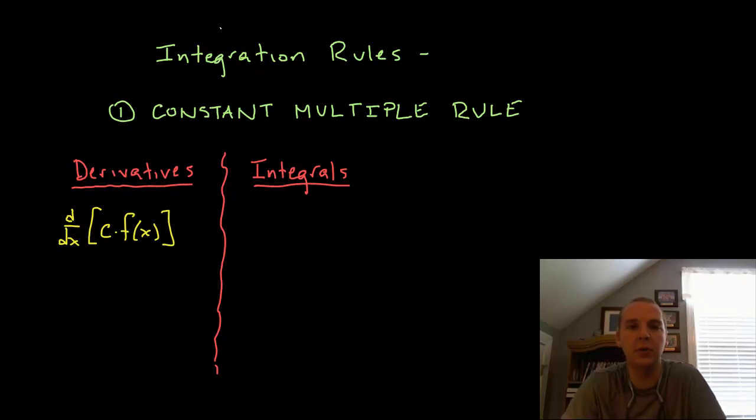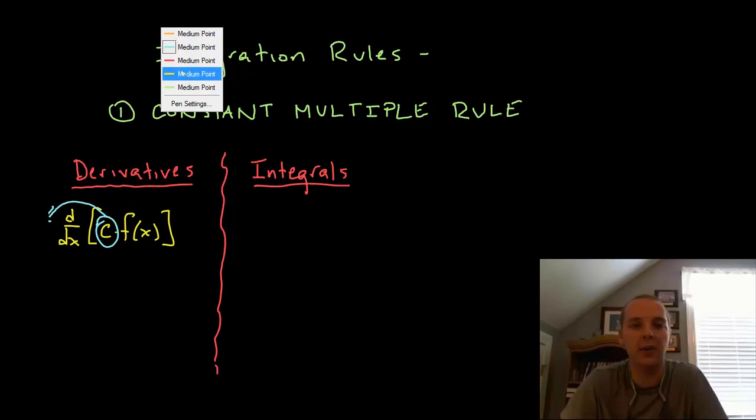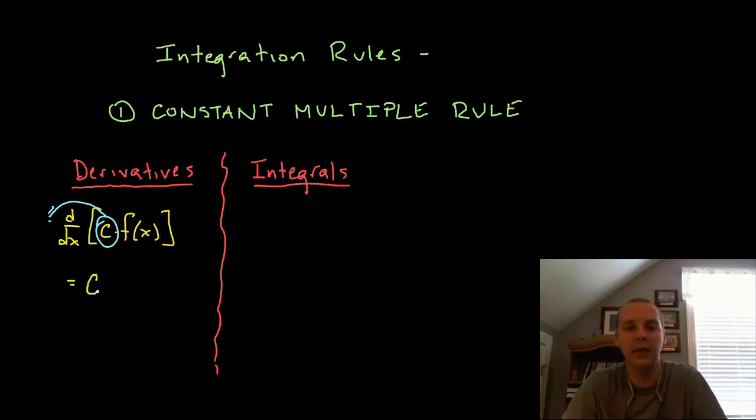What you could do is pull the constant out of whatever it was you were trying to differentiate. I like to call it a tag along constant and just differentiate the meat of the function, the actual function itself and you keep the constant. So this will be c times the derivative of f which we'll call f prime of x.